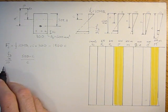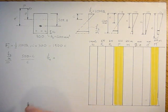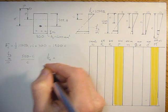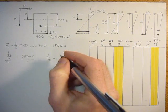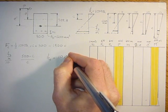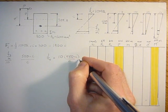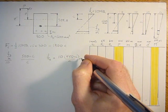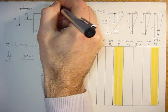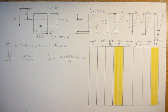From that we can derive what Fs is, the stress in the steel, in terms of the stress in the concrete. F of steel would be 10 MPa times 550 minus C divided by C times N. And N is 8.11. In the previous tutorial we calculated that, the modular ratio of the steel versus the concrete.